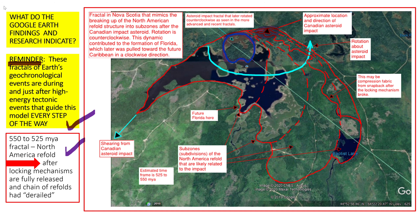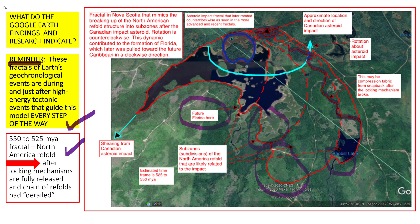Looking at this fractal, future Florida is pointed out here — the Florida plateau formed about 530 million years ago, so this may be right around that time. You can see a bunch of Floridas, a little bigger, with primitive-looking Florida shapes. There's an internal compressional feature — it may have gone here then snapped back to the outer red line. The energy probably caused these subdivisions as it compressed and then snapped back to some degree.